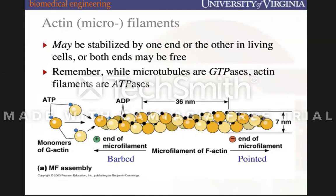Tubulin is a GTPase, but actin filaments are an ATPase. When free and not bound to the filament, actin is typically called G-actin or globular actin. The actin filament is referred to as F-actin or filamentous actin. When actin is referred to, it's either G-actin or F-actin, and a ratio of G-actin to F-actin denotes the degree of polymerization.